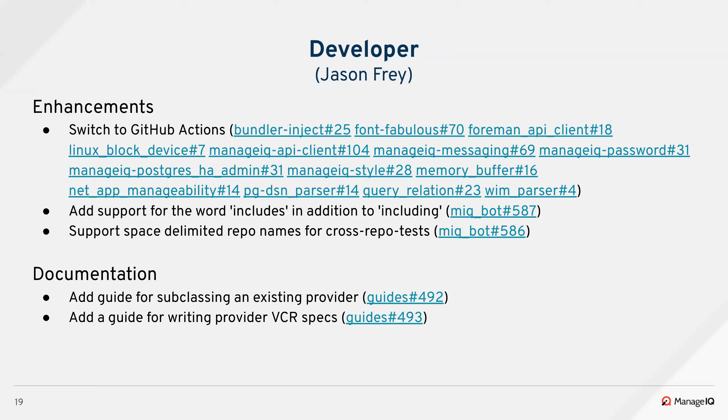On the developer side, the biggest change is that we switched almost all repositories to GitHub Actions. Only two remain unconverted due to the difficulty of how GitHub Actions deploys Postgres in a container — those are still ongoing, but a number were completed this sprint. On the MIQ bot, we added support for the word 'includes' in addition to 'including' for cross-repo tests — a UX convenience since people sometimes type 'includes' and the bot couldn't pick it up. Adam also added support for space-delimited repo names in addition to comma-separated, since many people accidentally use spaces.